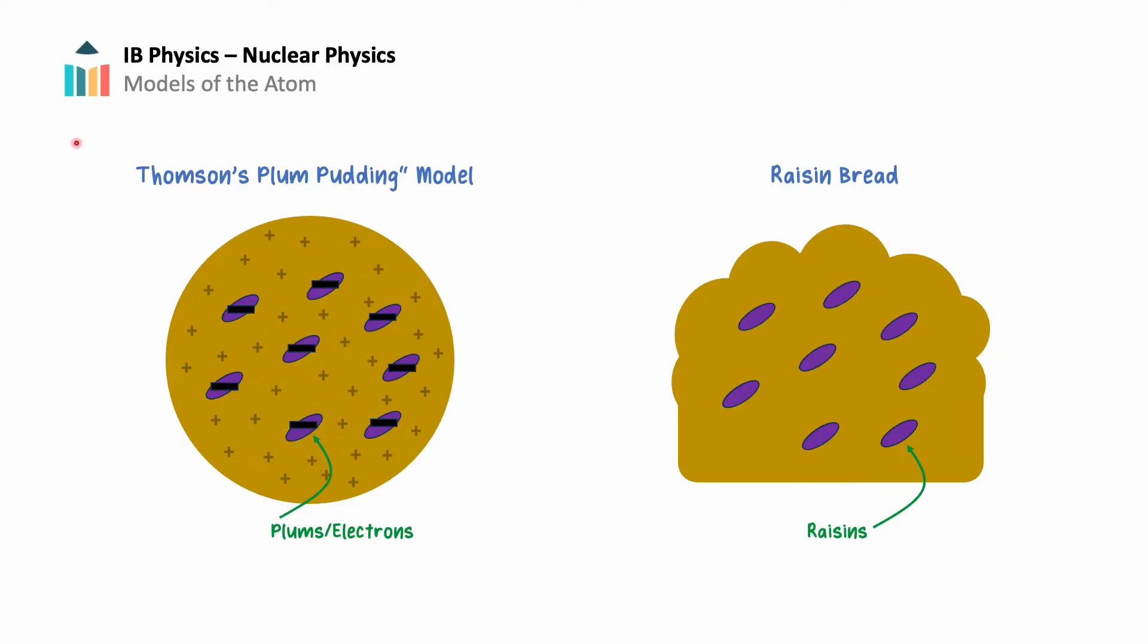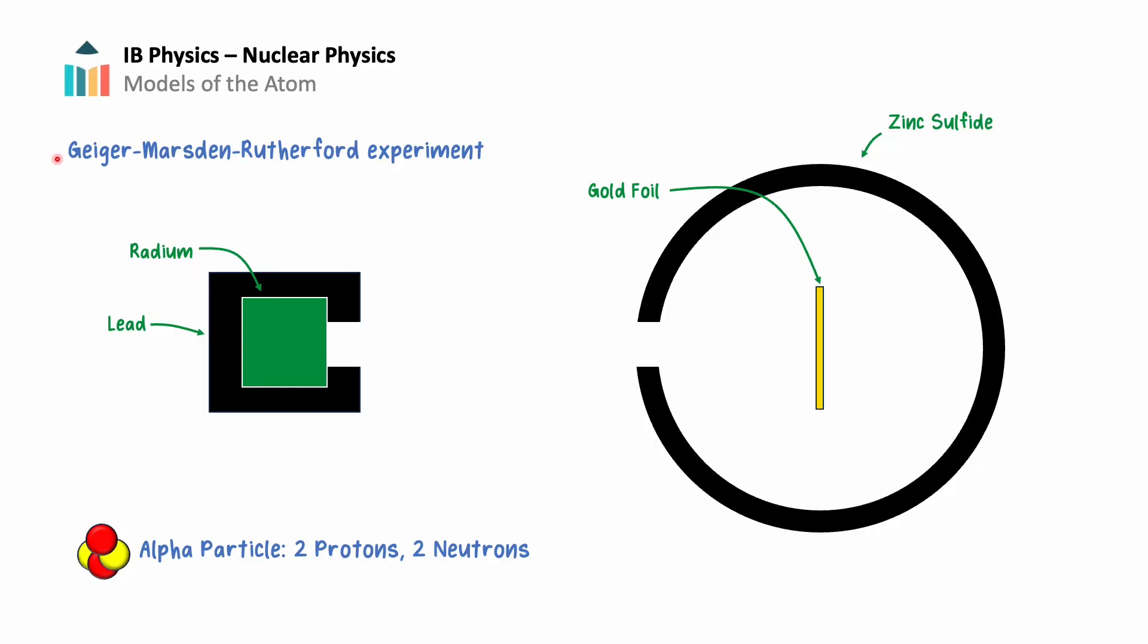That was until the Geiger-Marsden-Rutherford experiment. In this experiment, performed between 1908 and 1913, the scientists encased radioactive radium in lead, except for a small opening. This small opening allowed a beam of positively charged particles, alpha particles, to be directed towards a thin sheet of gold foil. The gold foil was surrounded by a zinc sulfide screen, which would flash green when an alpha particle struck its surface.